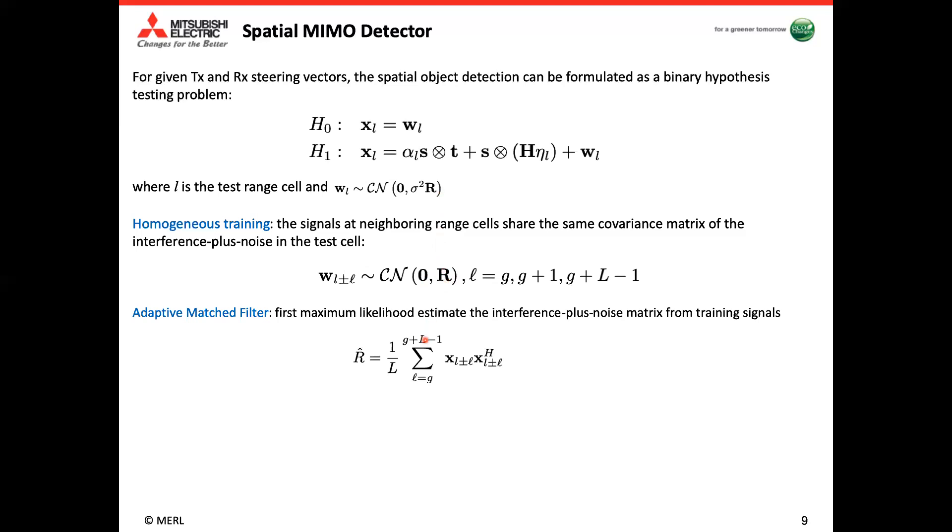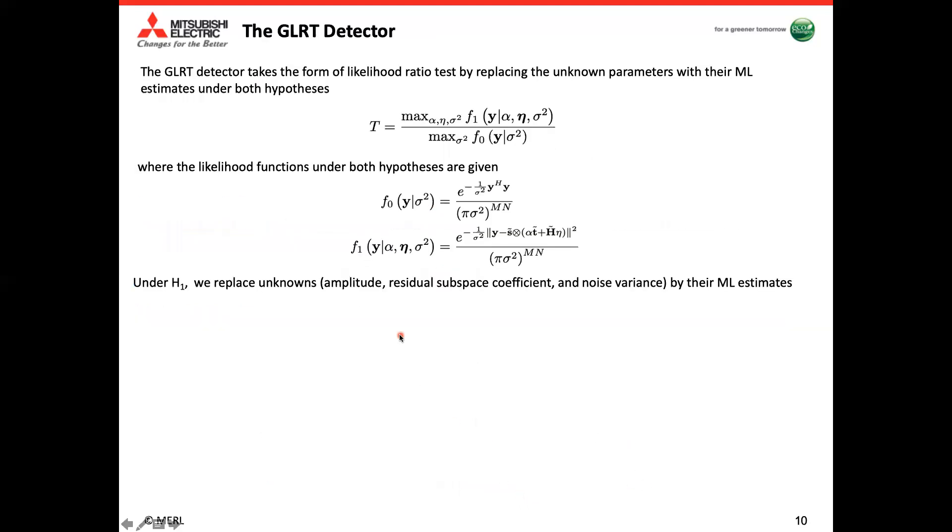So to help us to deal with clutter or interference in the background, we're also assuming that we have homogeneous training signals from nearby range cells with the similar covariance matrix as in the test range beam. So we're going to have the estimate from the sample covariance matrix from the homogeneous training signals, and then we will do the whitening on the test signal x_l at that particular range beam. We get y, the whitened signal. And then we do the similar whitening on the steering vector and steering subspace. So we're going to have the equivalent binary hypothesis testing problem.